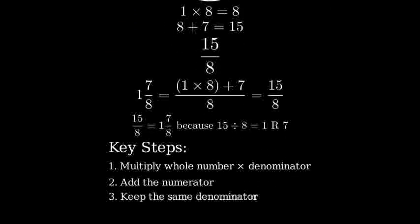Remember the key steps. Multiply the whole number by the denominator, add the numerator, and keep the same denominator. This will always give you the correct improper fraction.